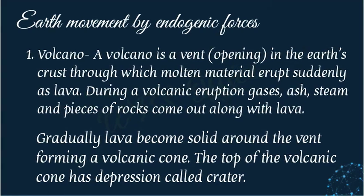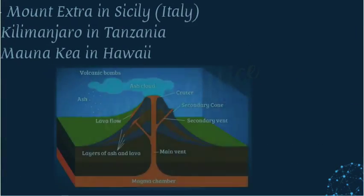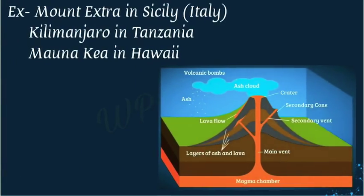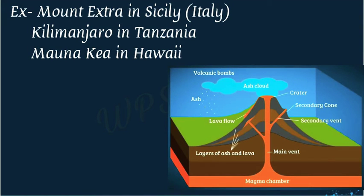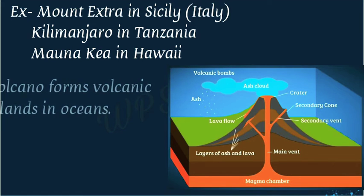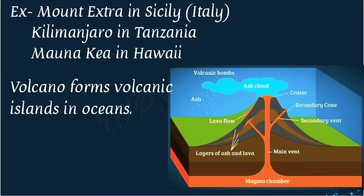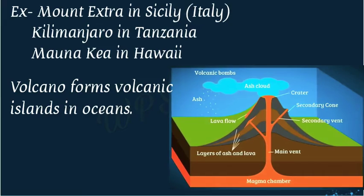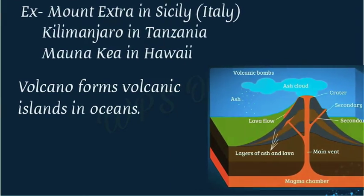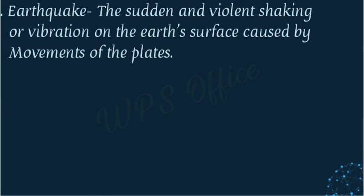The top of the volcanic cone has a depression called a crater. Examples of active volcanoes include Mount Etna in Sicily, Italy; Kilimanjaro in Tanzania; and Mauna Kea in Hawaii — all three are active volcanoes. If a volcanic eruption occurs under the sea, it can form small islands.